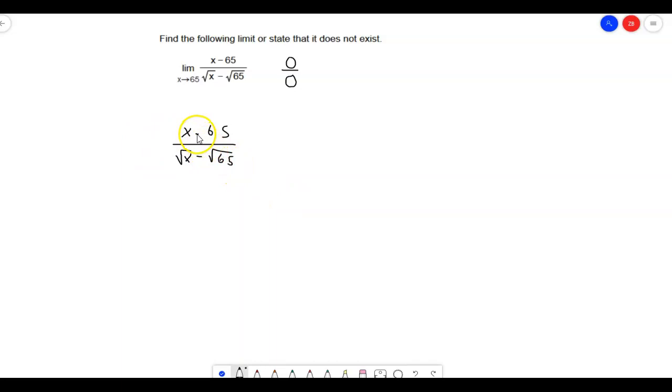And not only that, but there's the square roots down here. There's no square roots up there. What the heck do I do?